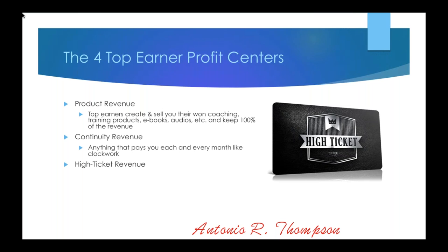All the top earners have some form of steady, consistent continuity revenue. The next big one is high-ticket revenue — products that pay you $1,000 or more per transaction. When you join MLSP and become an affiliate, there are a handful of products you can sell that pay you $1,000 plus. Here's a story of someone who recently got a $1,000 commission — she was just putting good quality content out there daily on Facebook, acting like a top earner, sharing value and content. Like all top earners, she had high-ticket revenue in place for big money paydays, and she got a $1,000 commission just from being consistent.